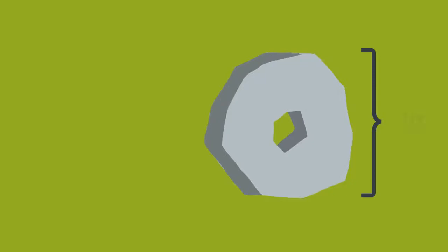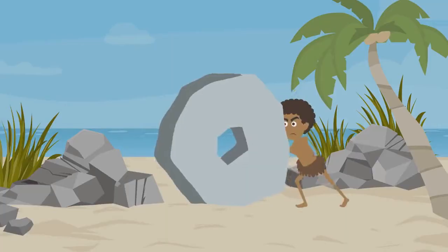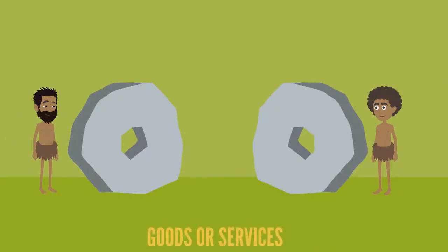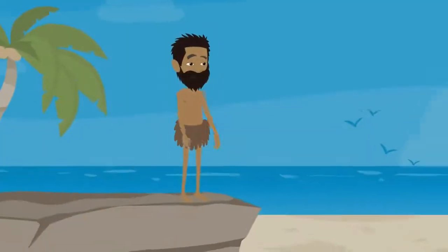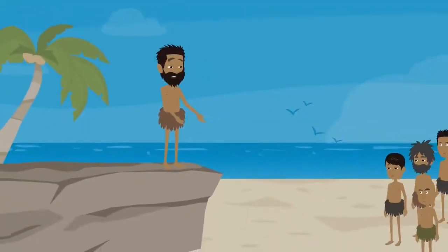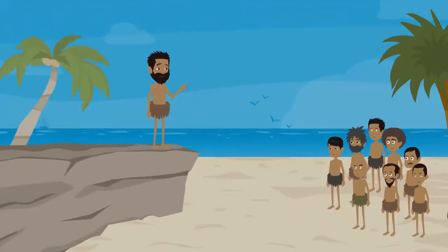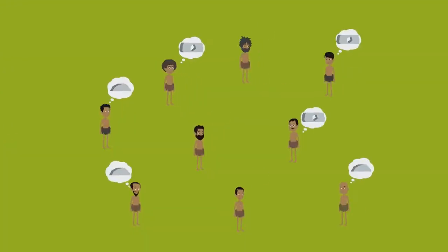Each of these stones weighed around 200 kilos, making them difficult to move. To exchange them as money for goods or services, they divided the stones into sections and announced to every adult on the island who owned what part of each stone. Each adult had to keep a mental ledger of ownership.